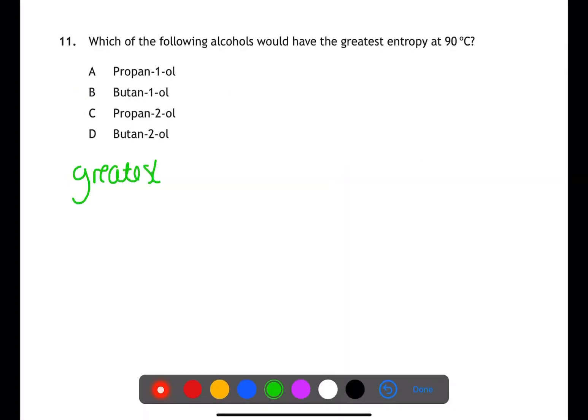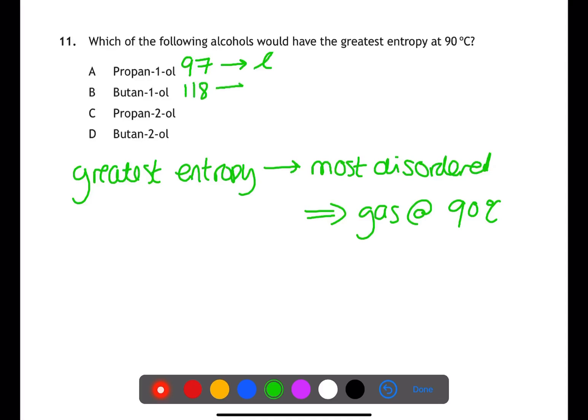For question 11, to have the greatest entropy requires to have the greatest disorder. As all of these alcohols would be a liquid at room temperature, we are looking for the one which will be a gas at 90 degrees. We can use a table in the data book to find the boiling points of the different substances. Propan-1-ol has a boiling point of 97 degrees and therefore will still be a liquid at 90 degrees. Butan-1-ol has a boiling point of 118 degrees and will also still be a liquid. Propan-2-ol has a boiling point of 82 degrees, so will have boiled and be a gas. Butan-2-ol has a boiling point of 100 degrees, so will still be a liquid at 90. Therefore propan-2-ol is our answer.